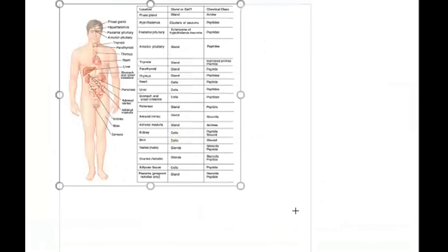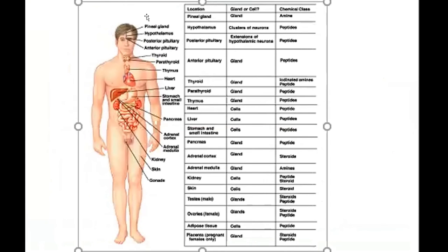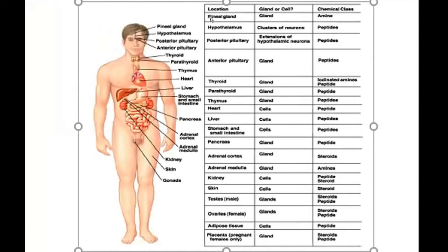Endocrine glands are not only glands. In the endocrine system there may be some structures with some cells but without whole organs — they may present only cells. For example, in the kidneys there are some cells with chemical products that are very important in endocrine function.